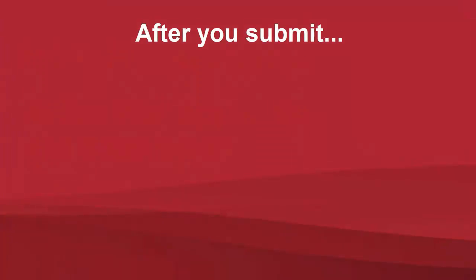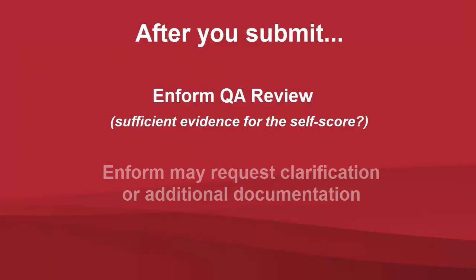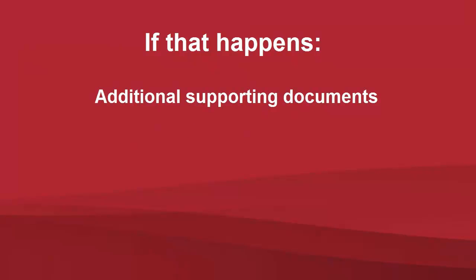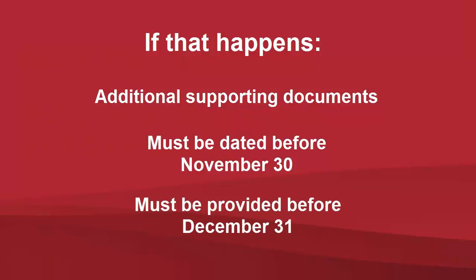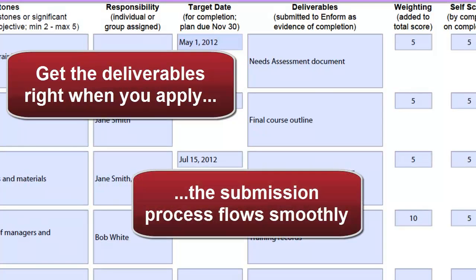So what happens after you submit your action plan? Enform will review your submission, especially the scoring and deliverables. The QA check will ensure the deliverable offers sufficient evidence for the self-score. In some cases, Enform will request clarification or additional supporting documentation. If that happens, any additional supporting documents must be dated before the November 30th deadline, and you must provide these before December 31st. If you get the deliverables right when you apply for an action plan, the submission process usually flows smoothly without the need for any additional information.